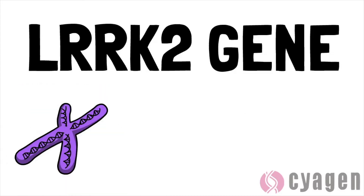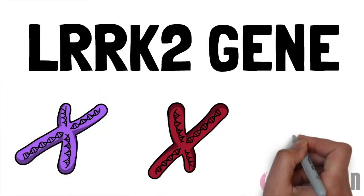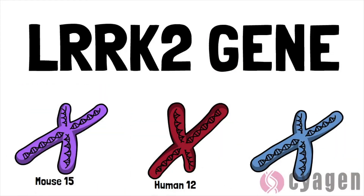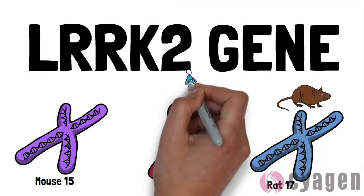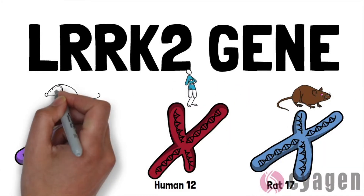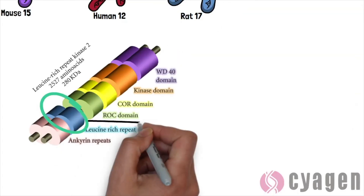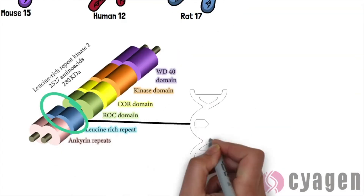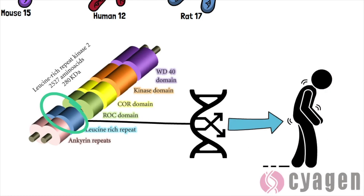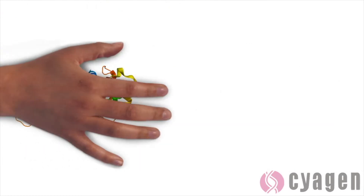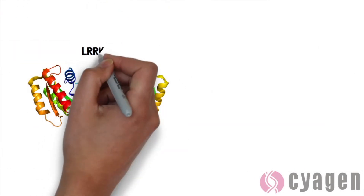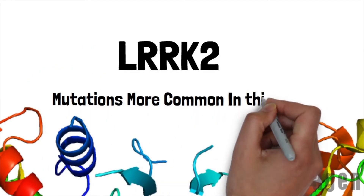The LRRK2 gene is a pathogenic gene of Parkinson's disease located on human chromosome 12, mouse chromosome 15, and rat chromosome 17. This gene is a member of the leucine-rich repeat kinase family in familial Parkinson's disease. Mutations in LRRK2 are the most common in this gene as compared to the other genes in its family.